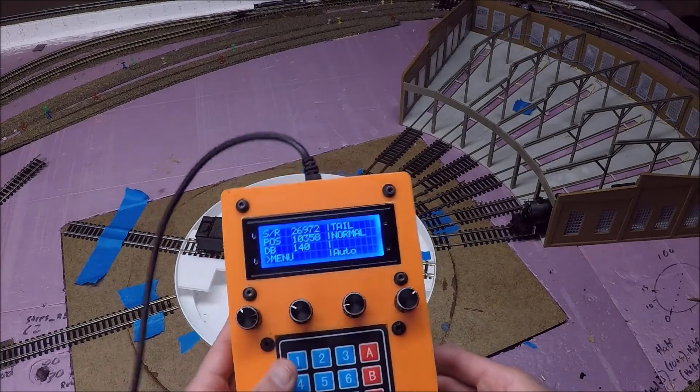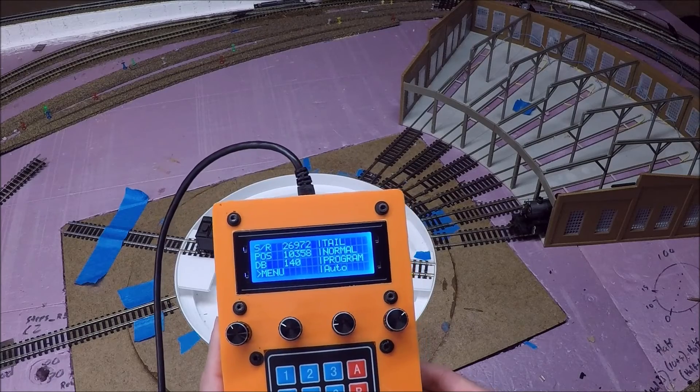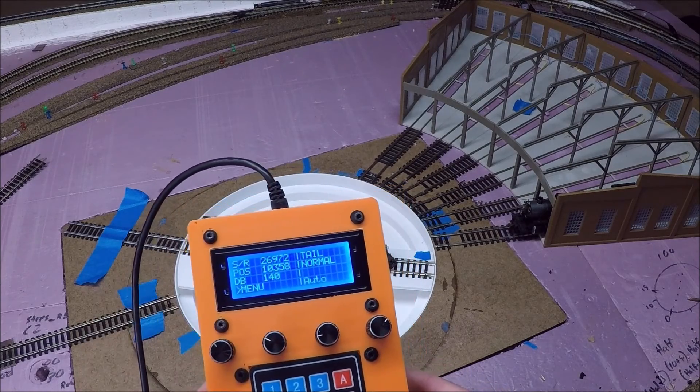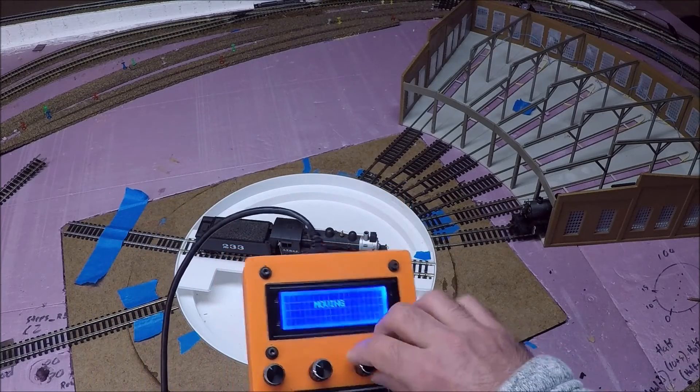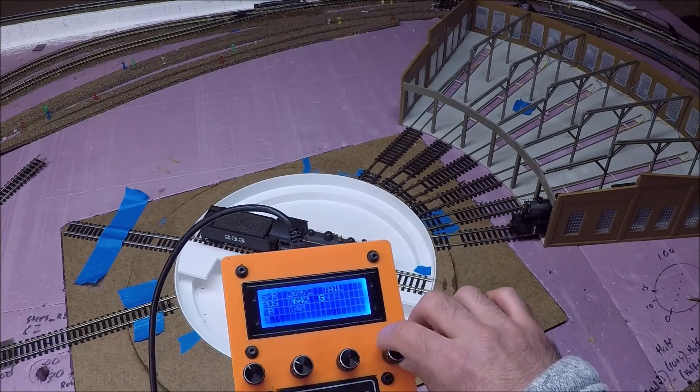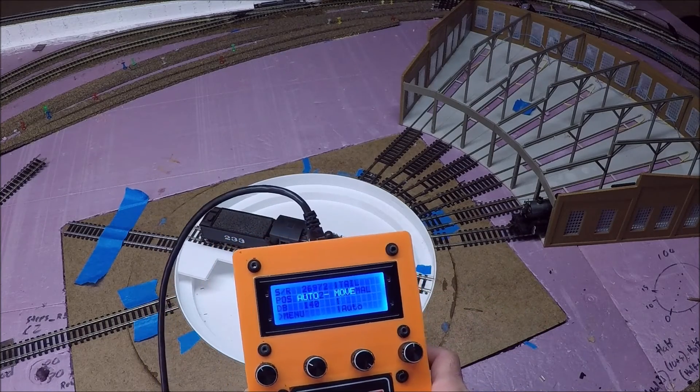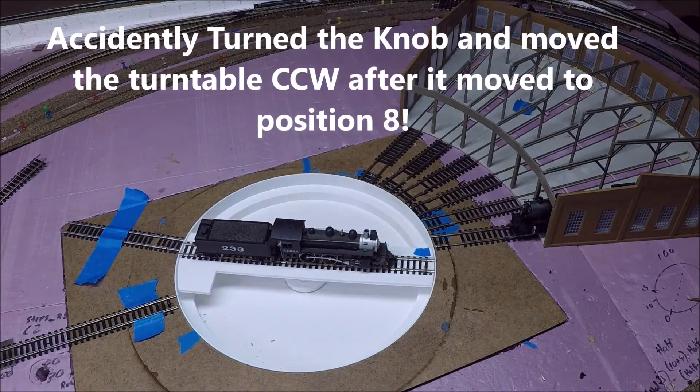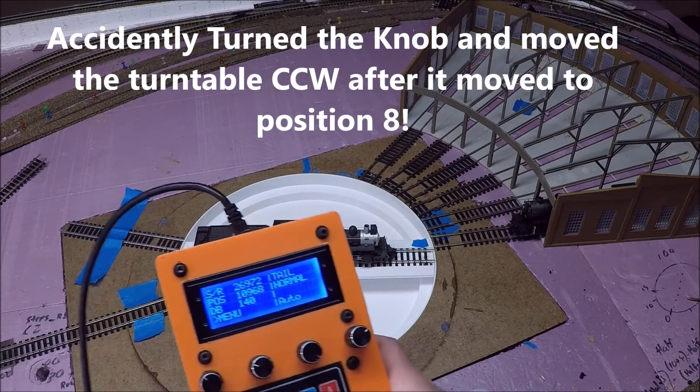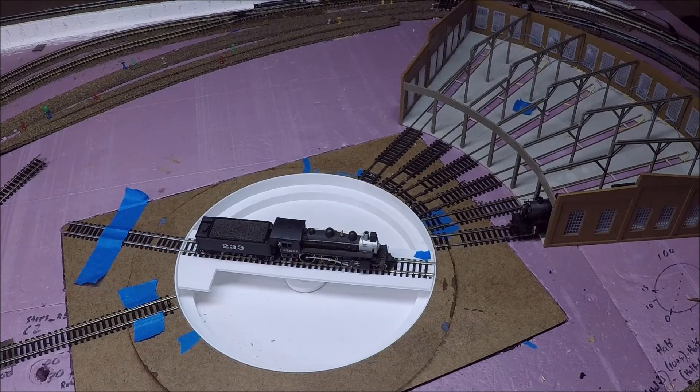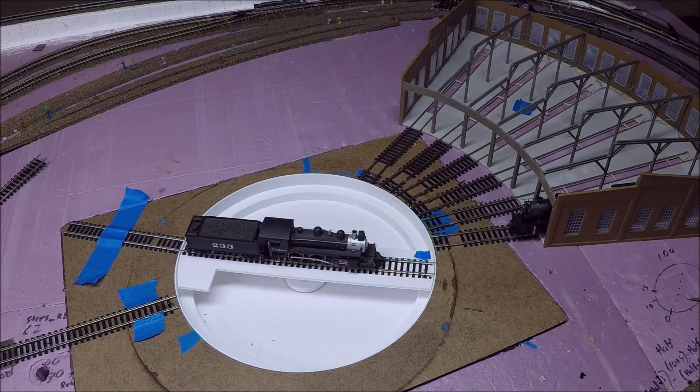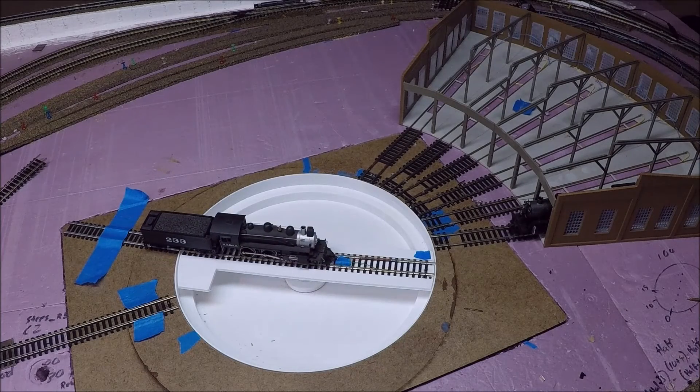To program that, let's say we want it to be on position 8. You hit the program button, 8, program complete. So we can move the turntable. Hit position 8. Oops, sorry, I ran past it. Position 8. There we go. And it lines up.